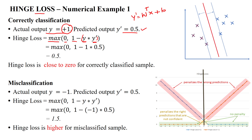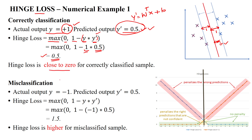When the actual output is 1 and the predicted value y' is 0.5, the hinge loss is 0.5. Looking at the plot, the margin between the decision boundary and the positive marginal line is 1, and the margin to the negative marginal line is also 1. A predicted value of 0.5 places the sample between the positive marginal line and the decision boundary, giving a small hinge loss in the range 0 to 1, close to 0, meaning it is correctly classified.